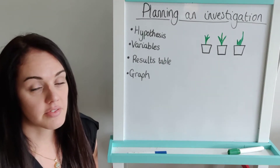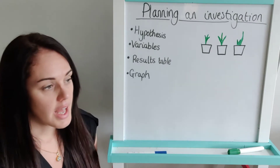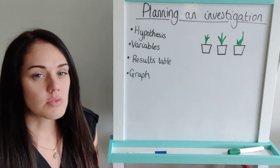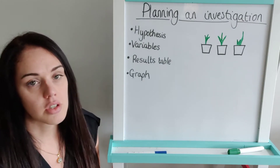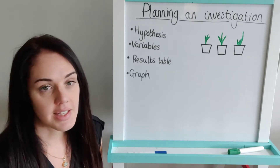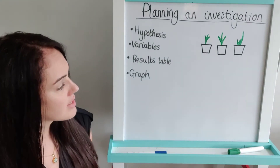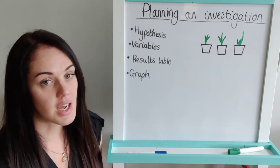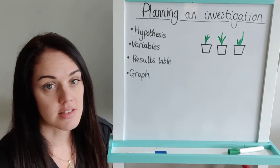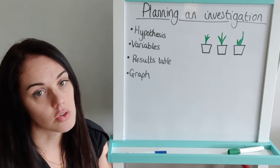Then your variables. We start with the independent variable first — this is the thing that you're going to change or compare. Sometimes you change it yourself, like soaking seeds or adding acid to a test tube. Sometimes you're comparing different groups, organisms, or time periods. In this investigation, the independent variable is the amount of time the seeds were soaked for in water. It's not just one word — it's a sentence describing your independent variable.